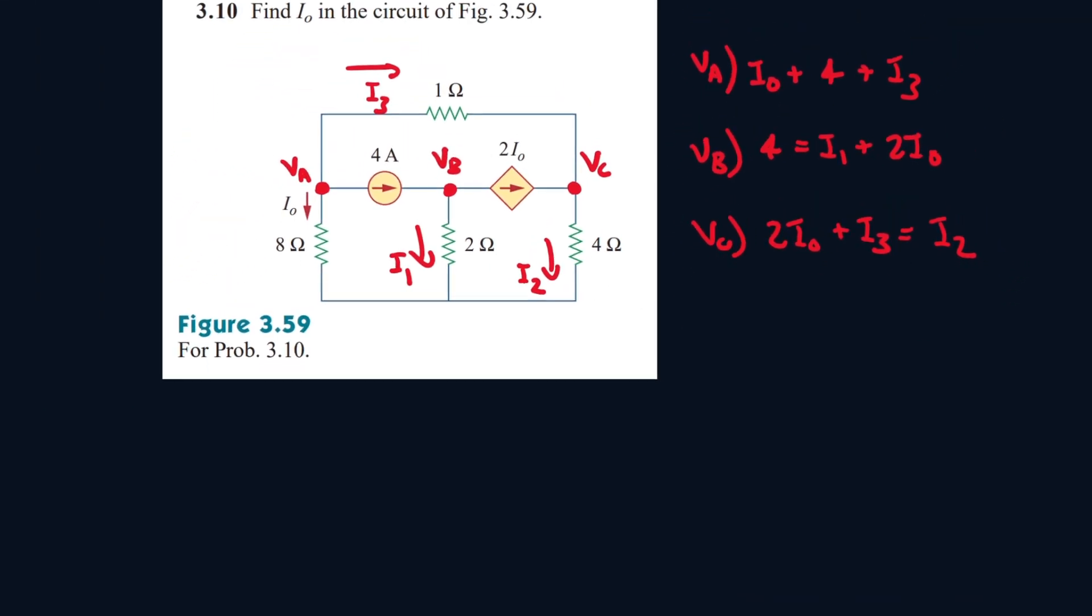So let's now find equations for our currents. IO will be VA over 8 because the ground node is 0 volts. I1 is VB over 2. I2 is VC over 4. And I3 is VA minus VC over 1.